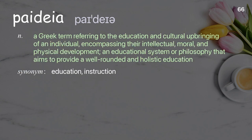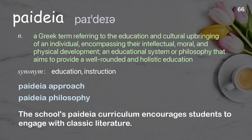Paideia. A Greek term referring to the education and cultural upbringing of an individual, encompassing their intellectual, moral, and physical development; an educational system or philosophy that aims to provide a well-rounded and holistic education. Examples: paideia approach, paideia philosophy. The school's paideia curriculum encourages students to engage with classic literature.